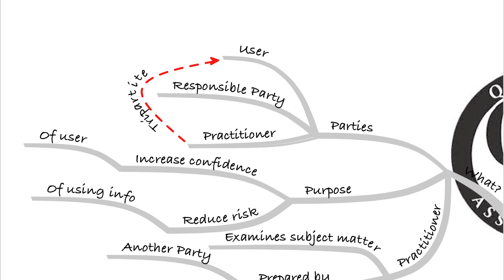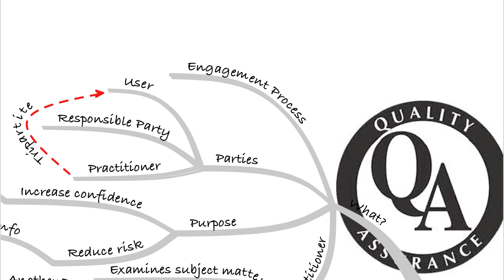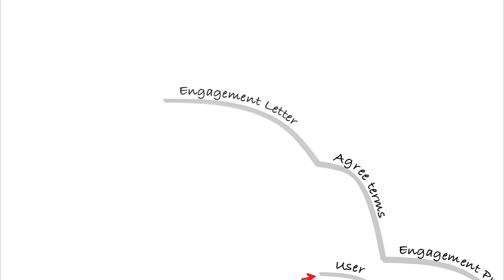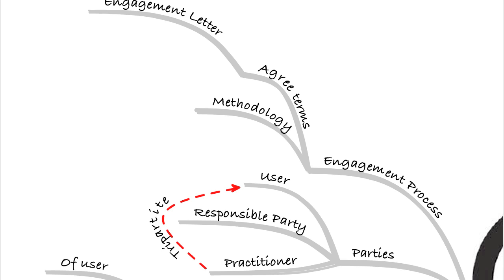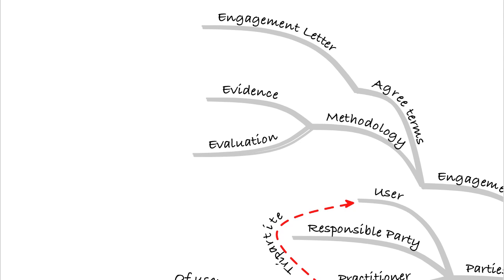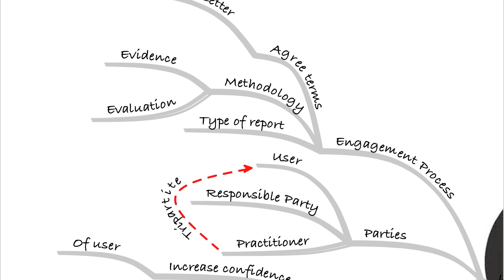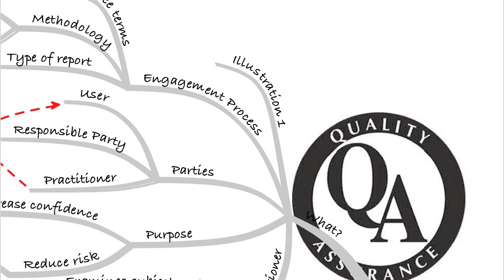There's also the engagement process, which we need to be aware of. That's where we agree the terms in the form of the engagement letter, which we look at in detail later in the course. We also look at the methodology that's going to be employed, the evidence that's going to be gathered, and the evaluation of that evidence. Lastly, the engagement process sets out the type of report that's going to be provided to the users. Go back and look at illustration one to see how that's applied in the exam.